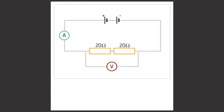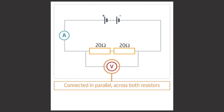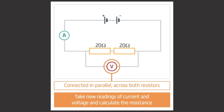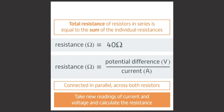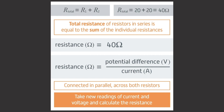Let's look at resistors in series. Add a second resistor in series with the first. Note that the voltmeter is connected in parallel across both of the resistors. Take new readings of current and voltage and calculate the resistance of the resistors. You should find that the total resistance is 40 ohms. This is because the total resistance of resistors in series is equal to the sum of the individual resistances: R total equals R1 plus R2. We can conclude that adding resistors in series increases the total resistance.